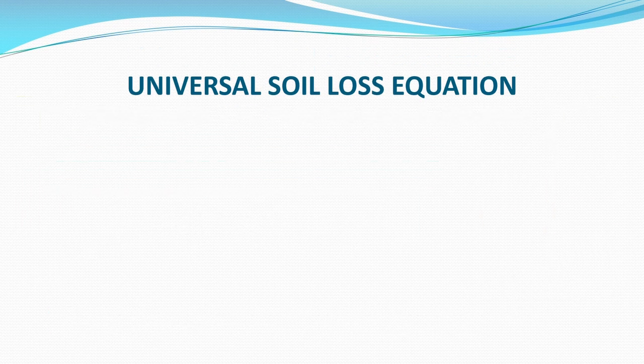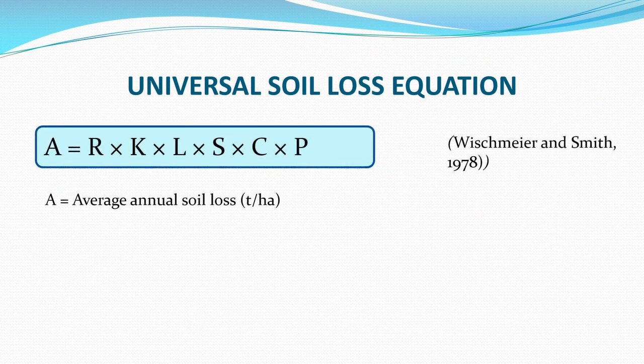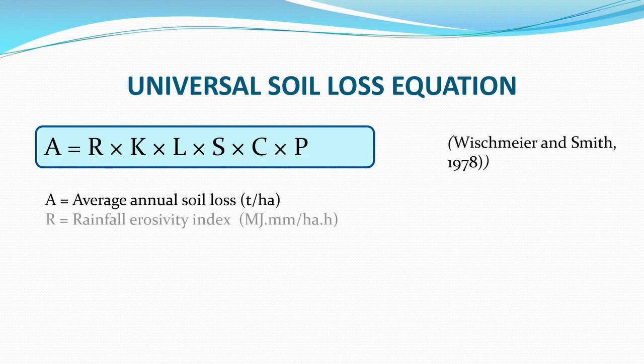The Universal Soil Loss Equation, provided by Wischmeier and Smith in 1978, is: A = R × K × L × S × C × P, where A is the average annual soil loss — let's say in tons per hectare — and R is the Rainfall Erosivity Index, related to the ability of rain to erode the soil, with units of megajoule-millimeter per hectare-hour.